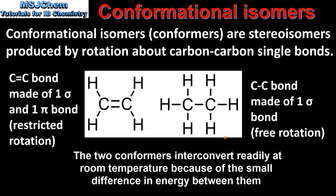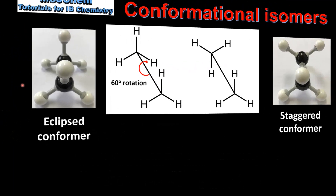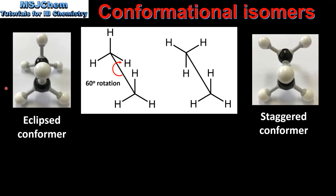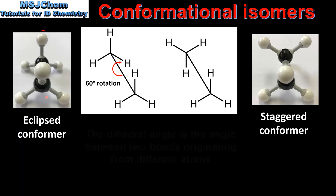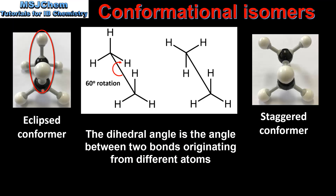The two conformers interconvert readily at room temperature. Here we can see the two conformers of ethane. On the left we have the eclipsed conformer and on the right we have the staggered conformer. In the eclipsed conformer the two C-to-H bonds are aligned with each other with a dihedral angle of 0 degrees. In the staggered conformer the two C-to-H bonds are not aligned with each other and have a dihedral angle of 60 degrees.